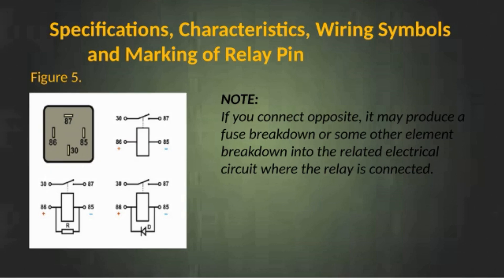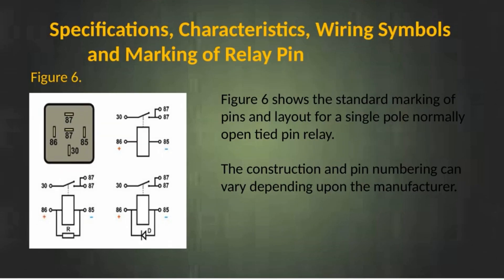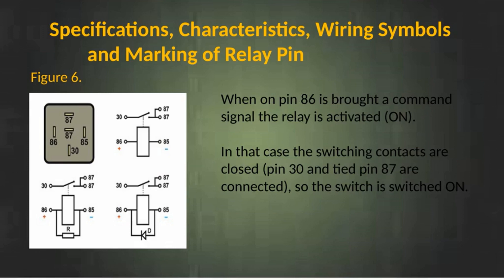Single pole normally open tied pin relay. Pin 85 — negative electric pole of the coil; Pin 86 — positive electric pole of the coil; Pin 30 — permanent plus 12 volts; Pin 87 or 87B — switched plus. Figure 6 shows the standard marking of pins and layout for a single pole normally open tied pin relay. The construction and pin numbering can vary depending upon the manufacturer. When on pin 86 is brought a command signal, the relay is activated. In that case the switching contacts are closed — pin 30 and tied pin 87 are connected — so the switch is switched on.